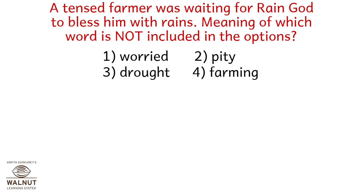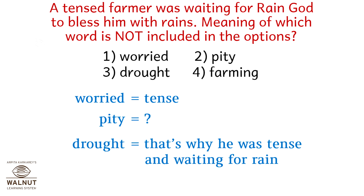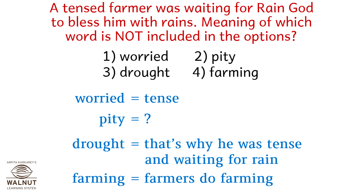A tensed farmer was waiting for rain god to bless him with rains. The meaning of which word is not included in these options? Option 1: worried, option 2: pity, option 3: drought, option 4: farming. Worried means tense — covered. Drought is why he was tense — covered. Farming — farmers do farming, so that's covered. Pity is not covered in the above sentence. So the correct answer is option 2.